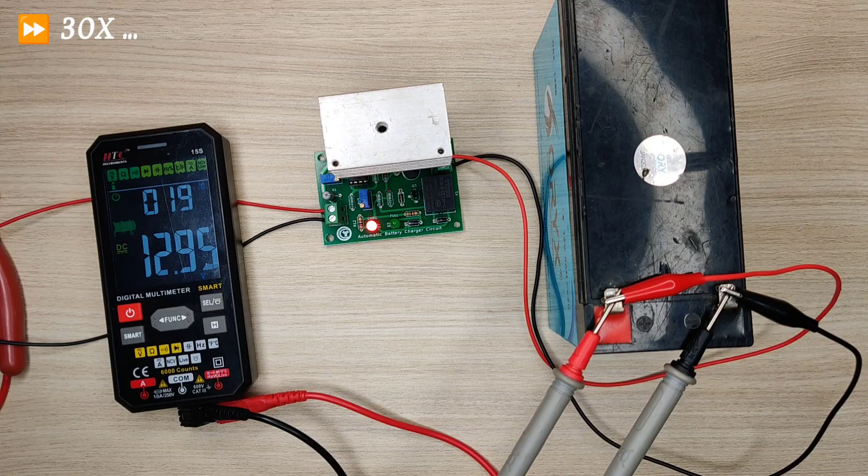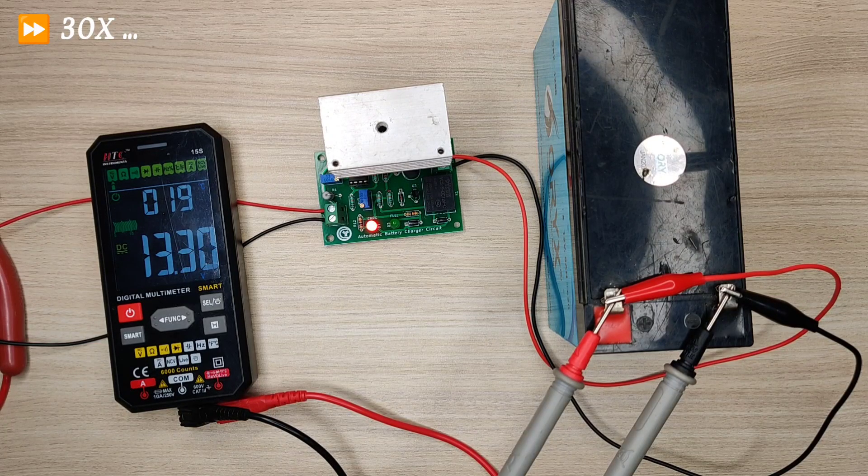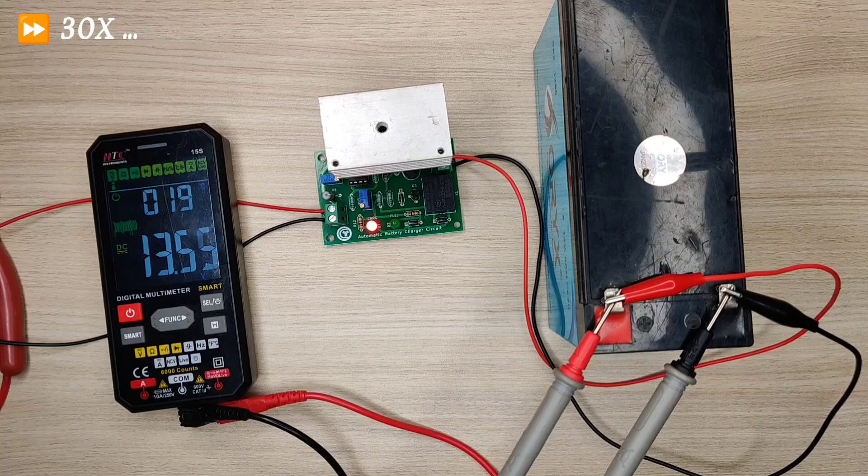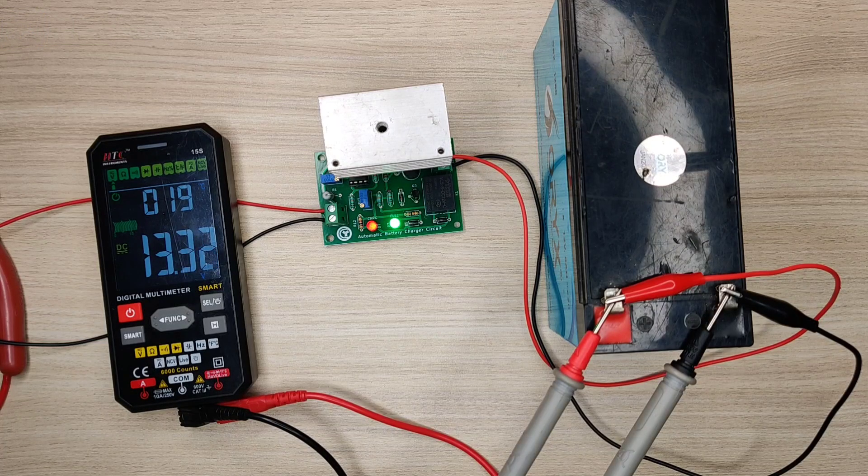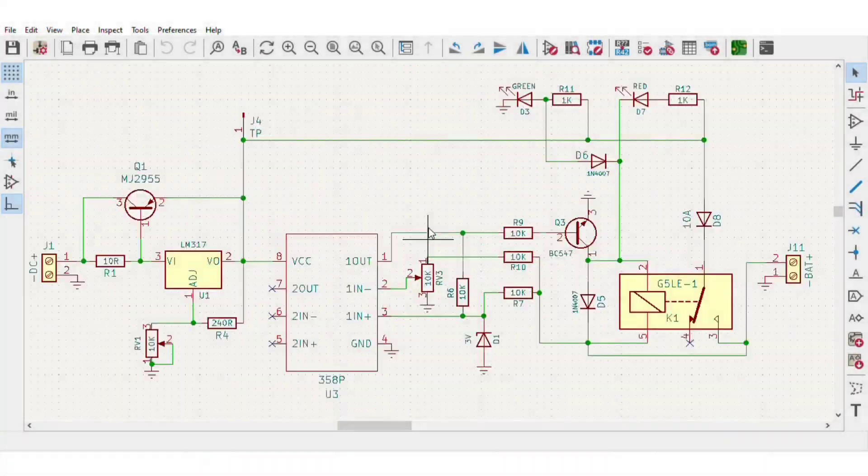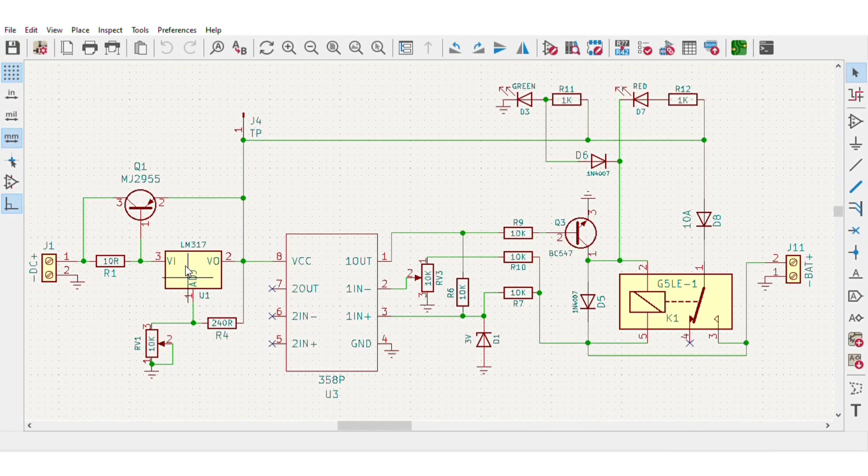Hi guys, today in this video I will be making a simple and precise auto cut-off 12 volt battery charger circuit that will protect your battery from overcharging. This circuit's input is controlled by the LM317 so that output voltage can be more stable in case you are supplying rectified DC from transformer.